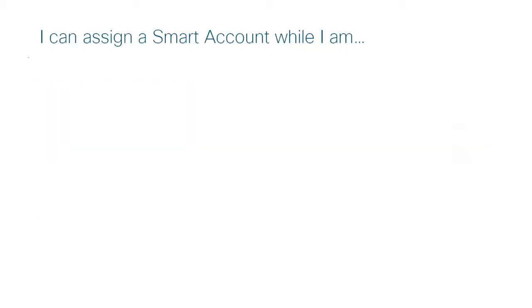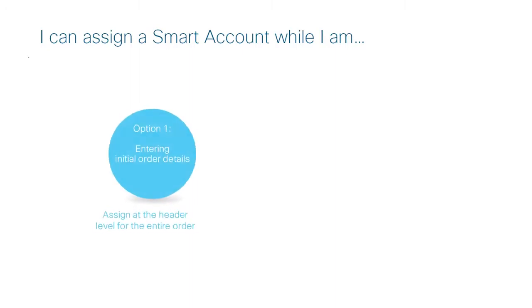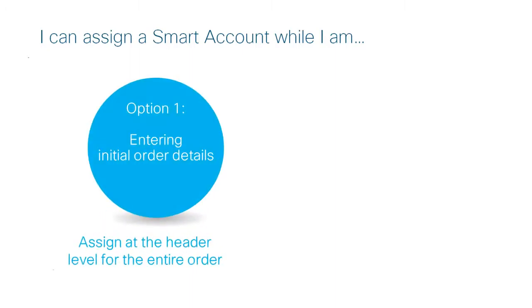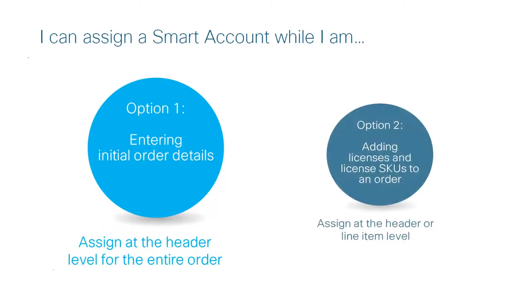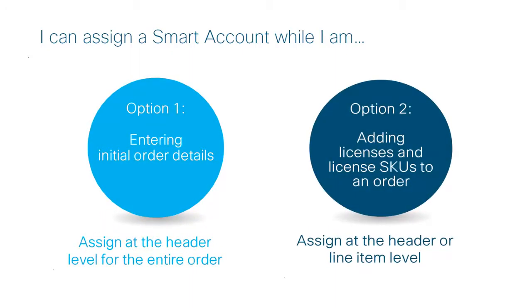Customer smart accounts and partner holding accounts can be assigned at two points in time: first, when entering initial order details, and second, when adding licenses to an order. Let's look at both options.